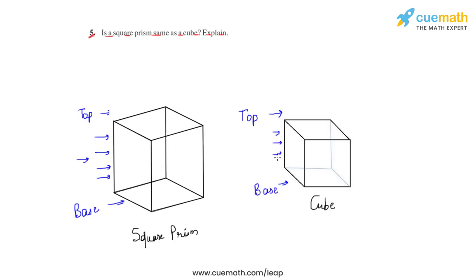So hence we can say a cube is definitely a square prism. But when it comes to a square prism, if these lateral faces are square in shape, then the square prism is a cube. But if the lateral faces are rectangular in shape, then the square prism becomes a cuboid.